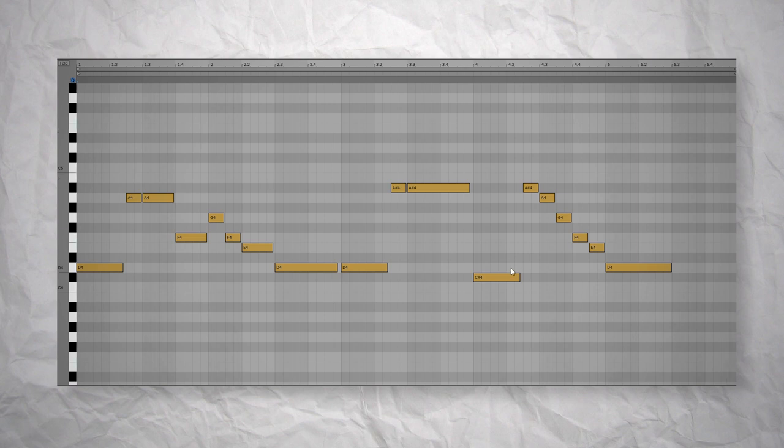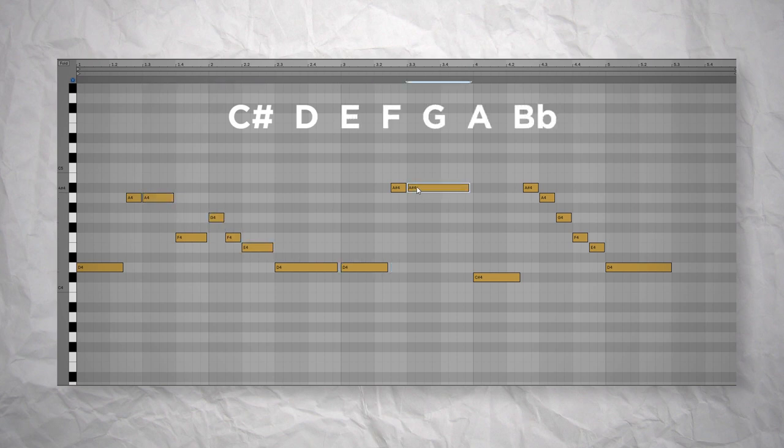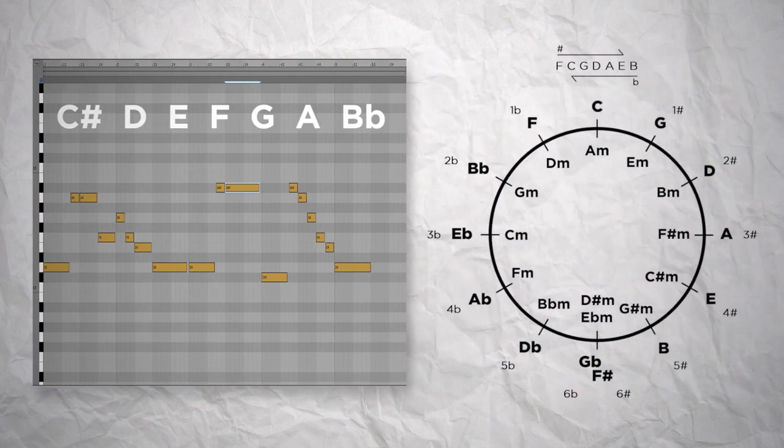So if we check the notes of the melody, we have a C sharp, a D, an E, F, G, A and B flat. So we have 7 different notes already, which is good, that means that we may already have all the notes of the scale we are going to use. And to find this scale we're going to use the cycle of fifths. I'll leave a link in the description to the episode that talks about the cycle of fifths, in case you need to refresh your memories on how it works.